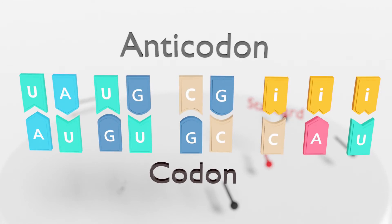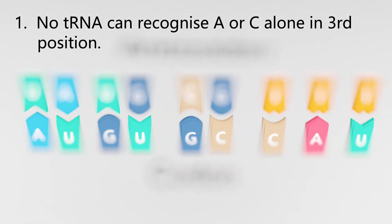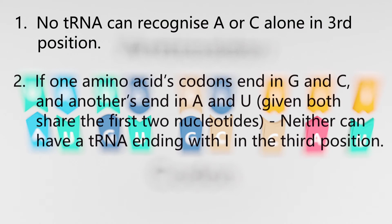For these rules to hold, Crick made several general assumptions about the anticodon sequences of any tRNA. First, there existed no tRNAs which can recognize A or C in the codon's third position alone. Second, if one amino acid's codons end in G and C, and another ends in A and U, given both share the first two same nucleotides, neither can possess a tRNA with inosine in the last position, as this would bind to both amino acid's codons.